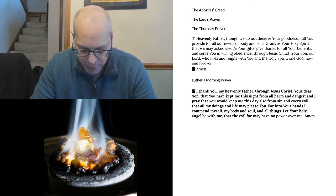Our Father, who art in heaven, hallowed be thy name. Thy kingdom come, thy will be done, on earth as it is in heaven. Give us this day our daily bread, and forgive us our trespasses, as we forgive those who trespass against us. And lead us not into temptation, but deliver us from evil. For thine is the kingdom, and the power, and the glory, forever and ever. Amen.